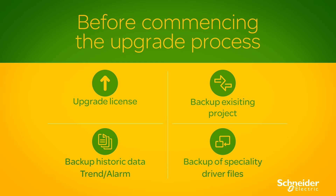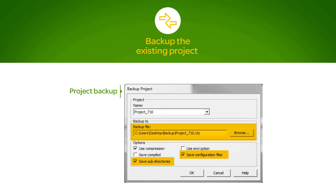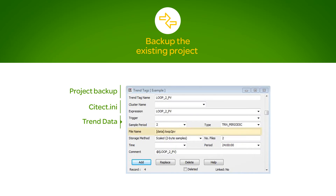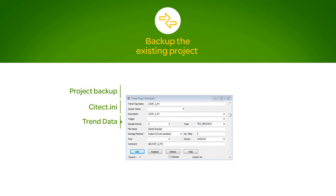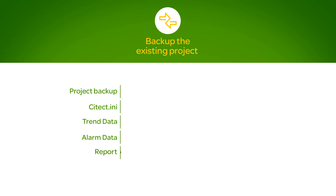Then back up your existing production project, including the historic data and any specialty drivers. When backing up the project, ensure you save the configuration files and the sub-directories. If you want to keep the historic data, copy the trend historic data from the path configured in the trend configuration, and the alarm save file from the path configured in the SciTech INI.